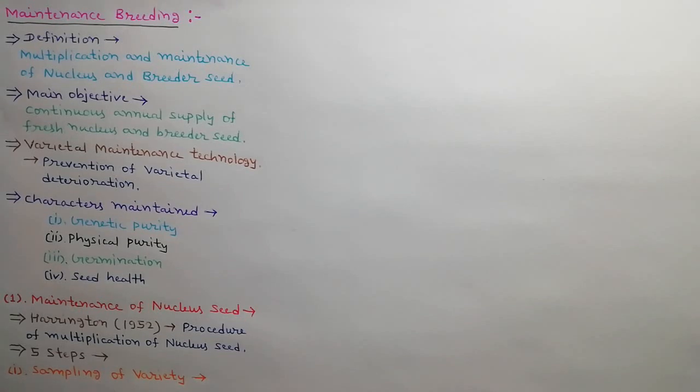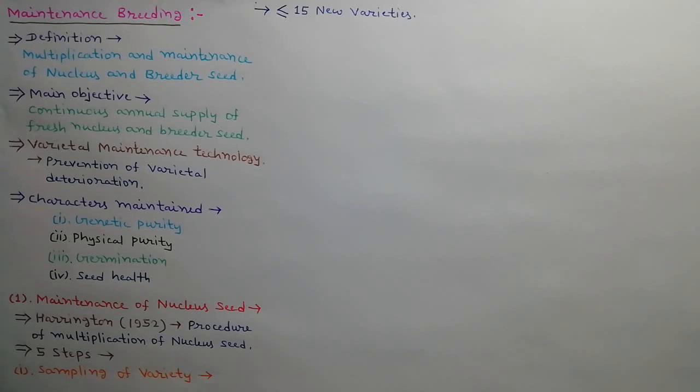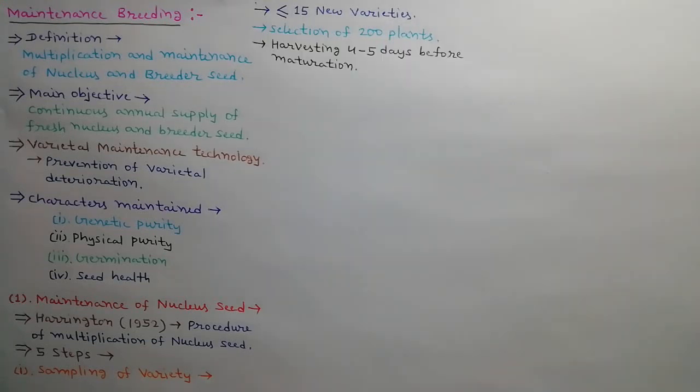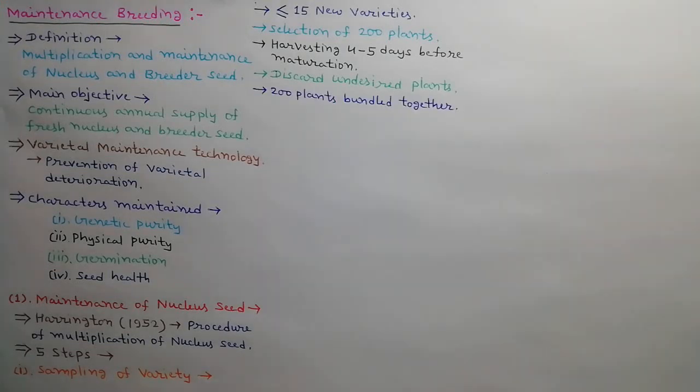First step is sampling of variety. During sampling process not more than 15 new varieties should be sampled at any one research station. Maximum 200 plants can be selected in one yield trial. Selected plants are harvested 4 to 5 days before maturation so that shattering can be avoided. Poor, diseased and inferior plants are discarded. All 200 selected plants should bind together and stored in cloth bag until yield results are obtained. Bundles of high yielding varieties are kept safe for further examination and inferior varieties are discarded.